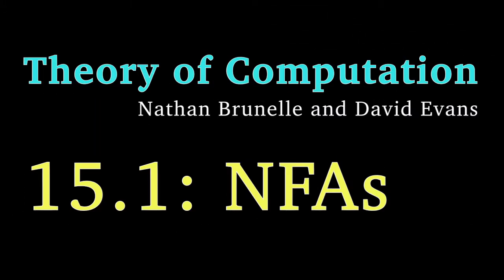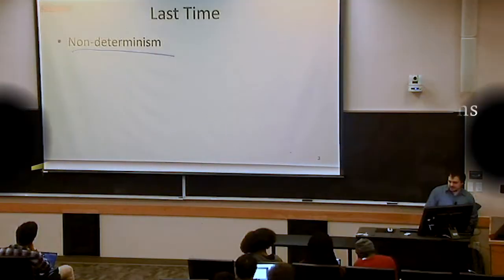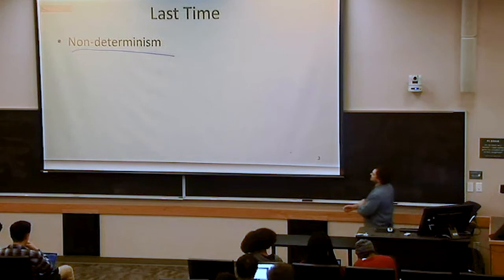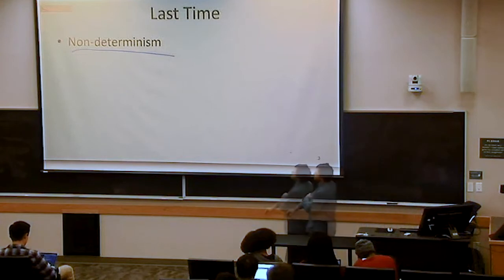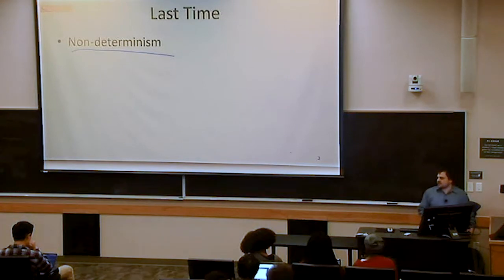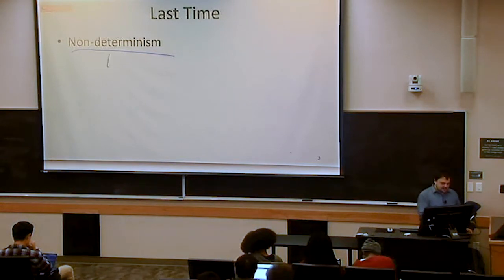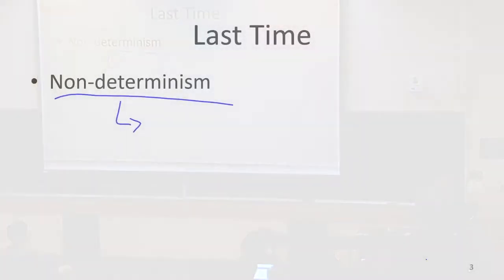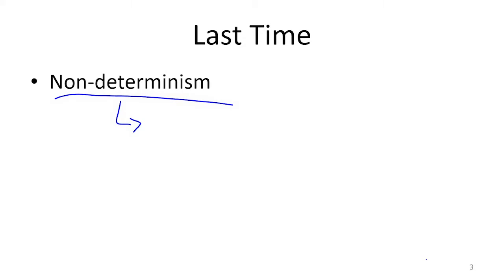Last time our topic of the day was non-determinism. We introduced this new idea for how we could talk about finite state automata, where we essentially just relaxed what we could do with them. This idea of non-determinism is going to come up again when we talk about Turing machines, so it's important to learn this.